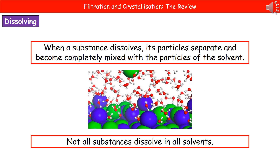If we consider dissolving first of all, when a substance dissolves, what's actually happening is the particles of the solute are separating and they become completely mixed with the particles of the solvent. And that's what you can see in the diagram there. The little red and white molecules — those are water — and you can see they're completely surrounding the green and the blue ones, which are the particles of our solute. So they're being pulled away from the main mass and then surrounded by the solvent.